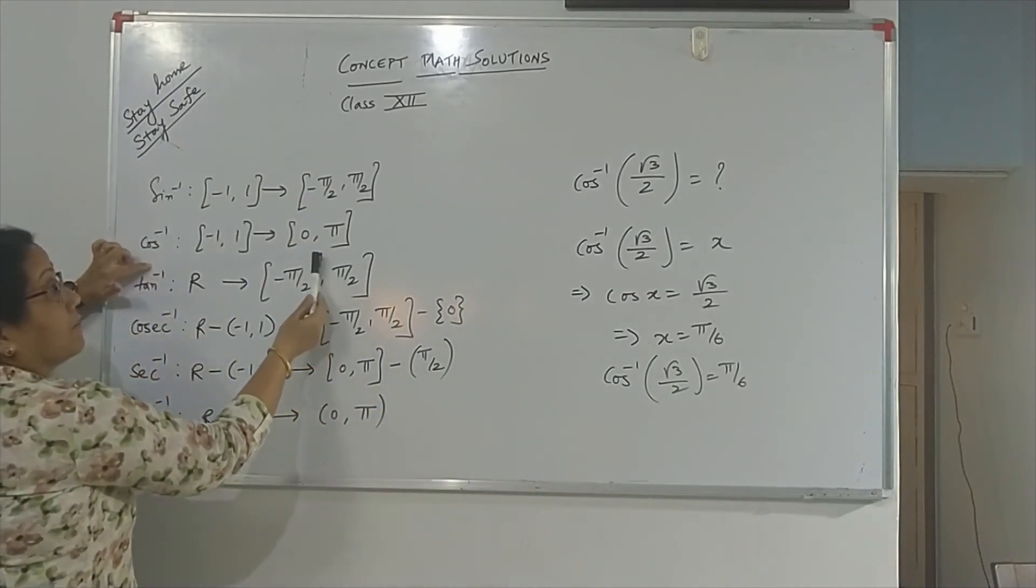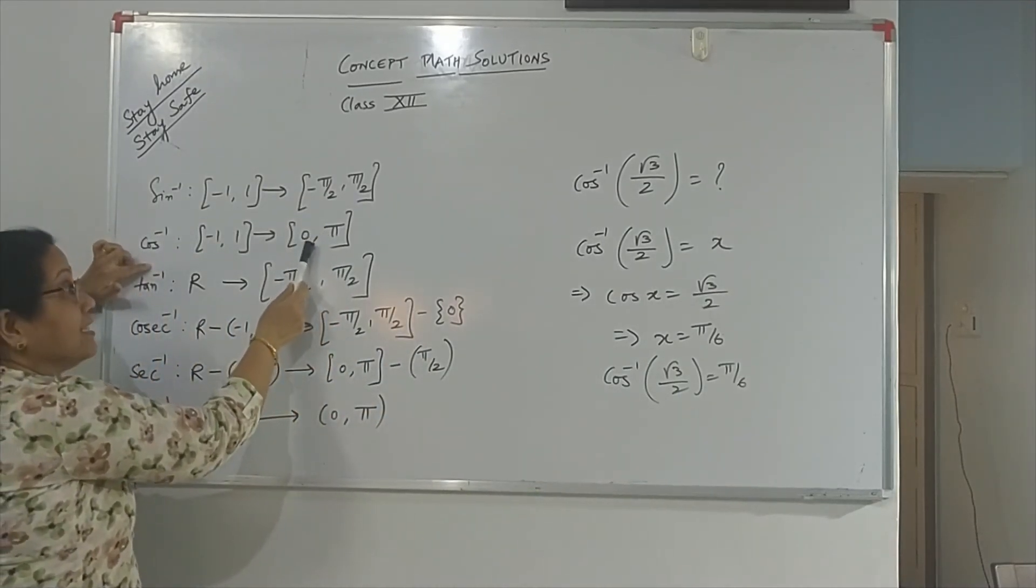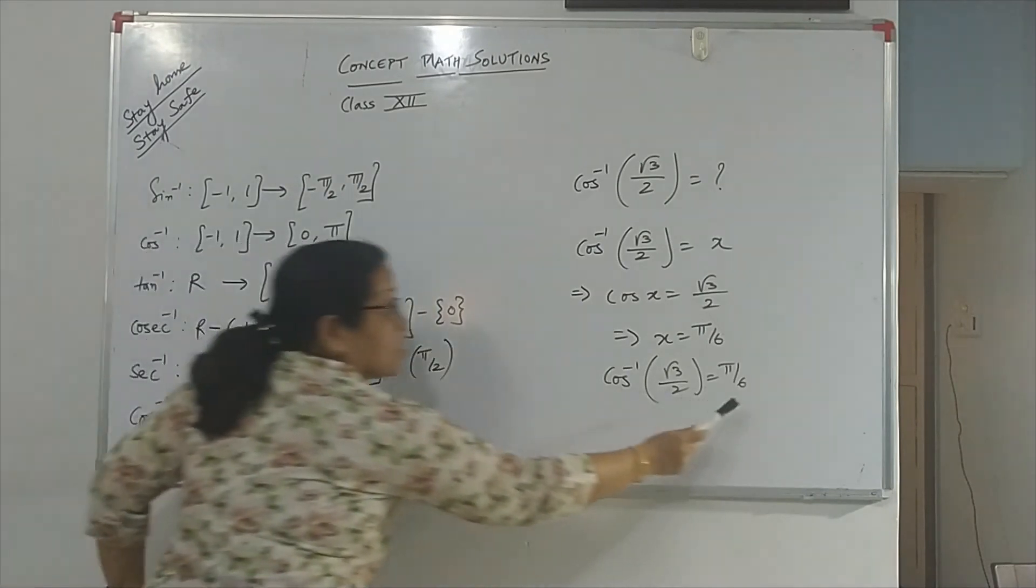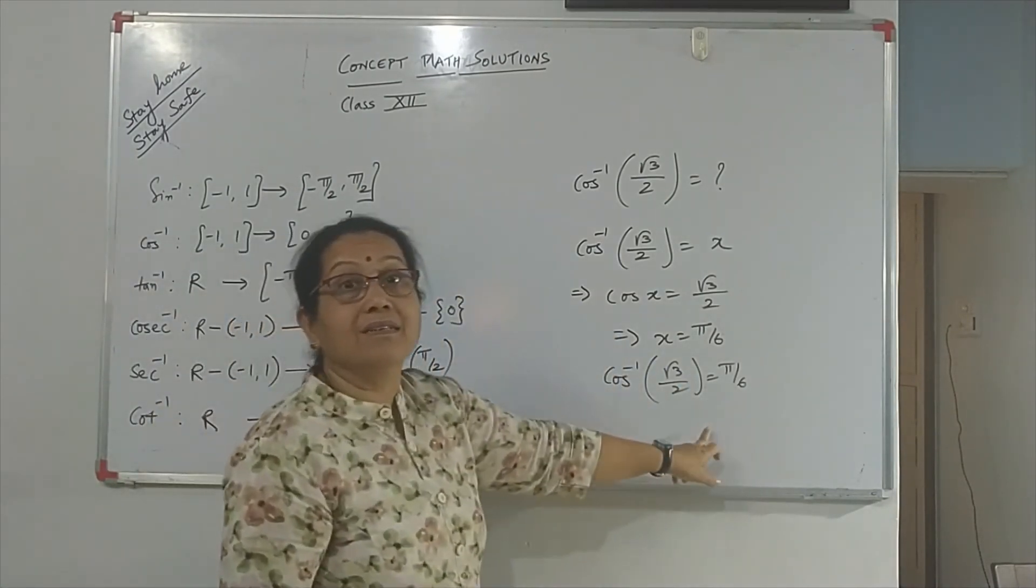But if you want a value which is in the principal value branch, cos inverse the principal value branch says range is 0 to π. This falls in 0 to π. Therefore, our answer is correct.